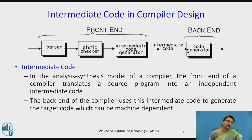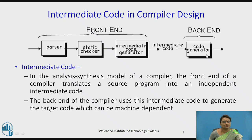As I told earlier, intermediate code is generated as an output of the front end. You can see in this diagram that this is the front end part of the compiler and this is the back end. The back end is generating the target program, which is done by the code generator. In the front end there are many phases like syntax and semantic analysis. The output of the parser is given to the static checker and that is given to the intermediate code generator, which produces one form of the source program called intermediate code.